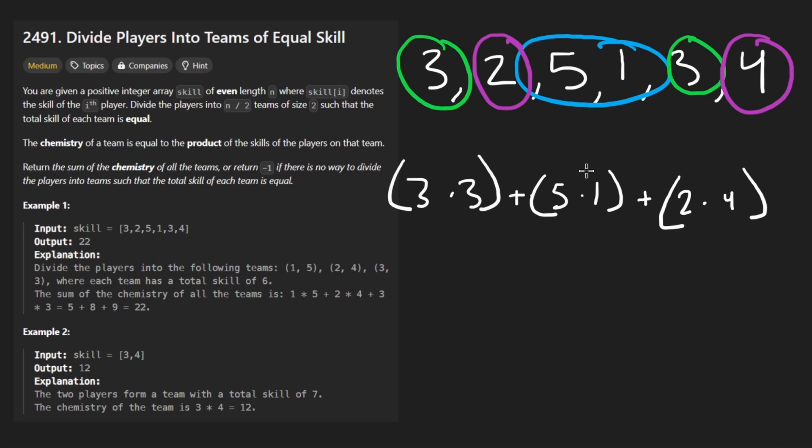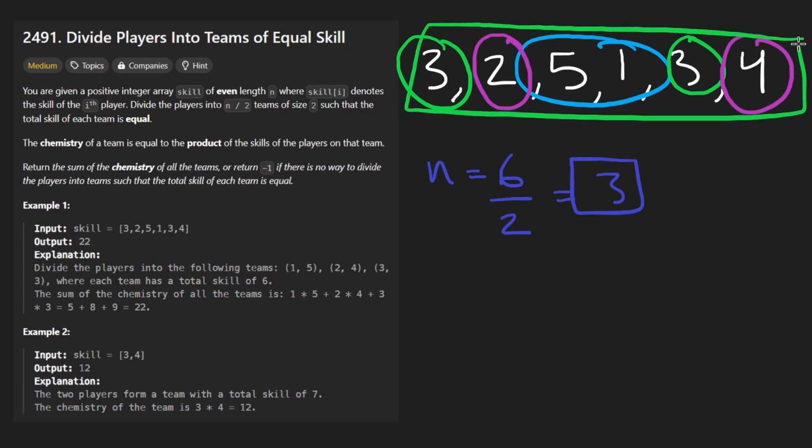Now, the first question you might wonder is, what if there are multiple solutions? What do we do in that case? Well, I'm going to show you that there can't possibly be multiple solutions, and once I show you that, you'll probably know how to solve the problem pretty easily. The main requirement is that each group sums up to the same thing. So let's say we have n elements. In this case, n is equal to six. So we're going to have this divided by two, this many groups. We're going to have three groups. So if I told you that every element in the input is going to be a positive integer, can you tell me how much each group needs to have?